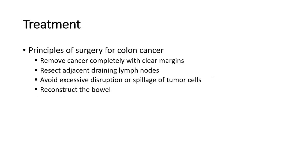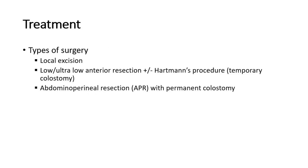The principles of surgery for colon cancer include removing the cancer completely with clear margins — 5 cm proximally and 5 cm distally — resecting the adjacent draining lymph nodes, avoiding disruption or spillage of tumor cells, and reconstructing the bowel after surgery. For small tumors, local excision can be done. For larger tumors, the two main surgeries are anterior resection plus or minus Hartmann's procedure, which involves formation of a temporary colostomy, or APR — abdominal perineal resection — with a permanent colostomy.